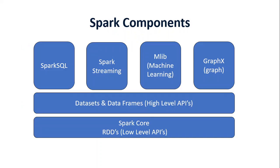Now let's look at the Spark components, from top to bottom. Spark Core is the base engine for large-scale parallel and distributed data processing. Basically, you can say it is the place where all the magic happens in Spark. But as a user, you don't deal with this much. On top of that, we have two more high-level APIs, which are datasets and data frames, and we're going to talk about them in this course.